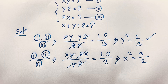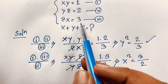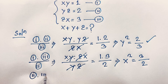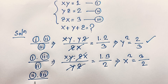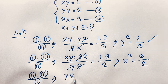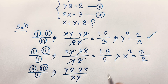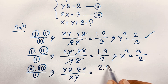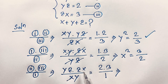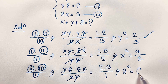Now I multiply the second equation and third equation, and divide by the first equation. That gives yz times zx over xy, equal to 2 times 3 over 1. The x's cancel out, the y's cancel out, leaving z squared equals 6.